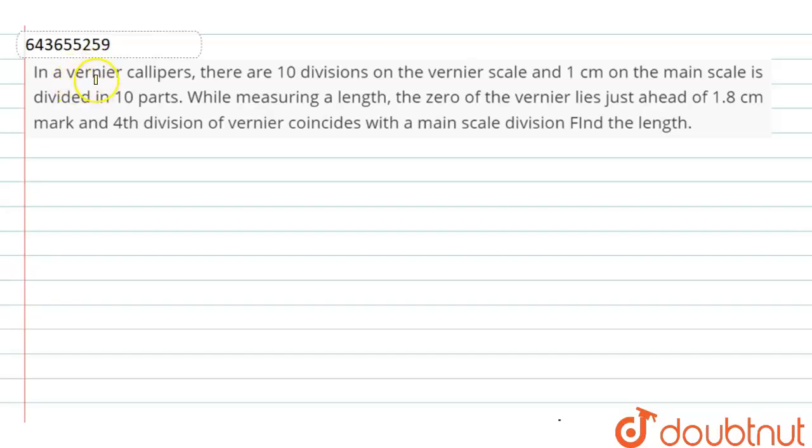Hello dear students, the question is: In a Vernier caliper, there are 10 divisions on the Vernier scale and 1 centimeter on the main scale is divided in 10 parts.